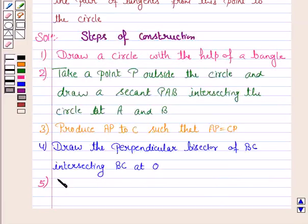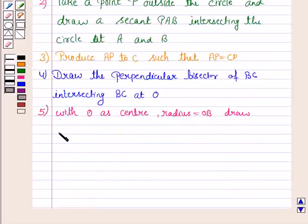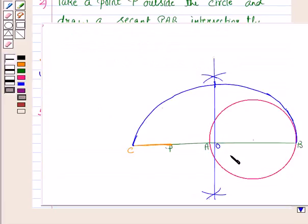The next step is, with O as center and radius OB, draw a semicircle with BC as diameter.